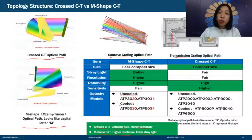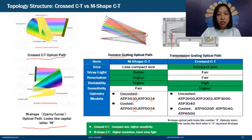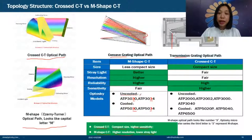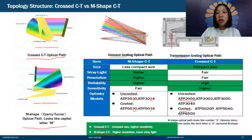In Optosky's model numbering, we use the digit '3' in the third position to indicate M-shaped CT. So if you see a model number with '3' as the third digit, it is M-shaped CT. We divide products into uncooled (3-series) and cooled (5-series) for M-shaped CT. For cross-CT, the most popular is the ATP-2000 series and ATP-3000 series, with the scientific-class ATP-6500 as the top model.